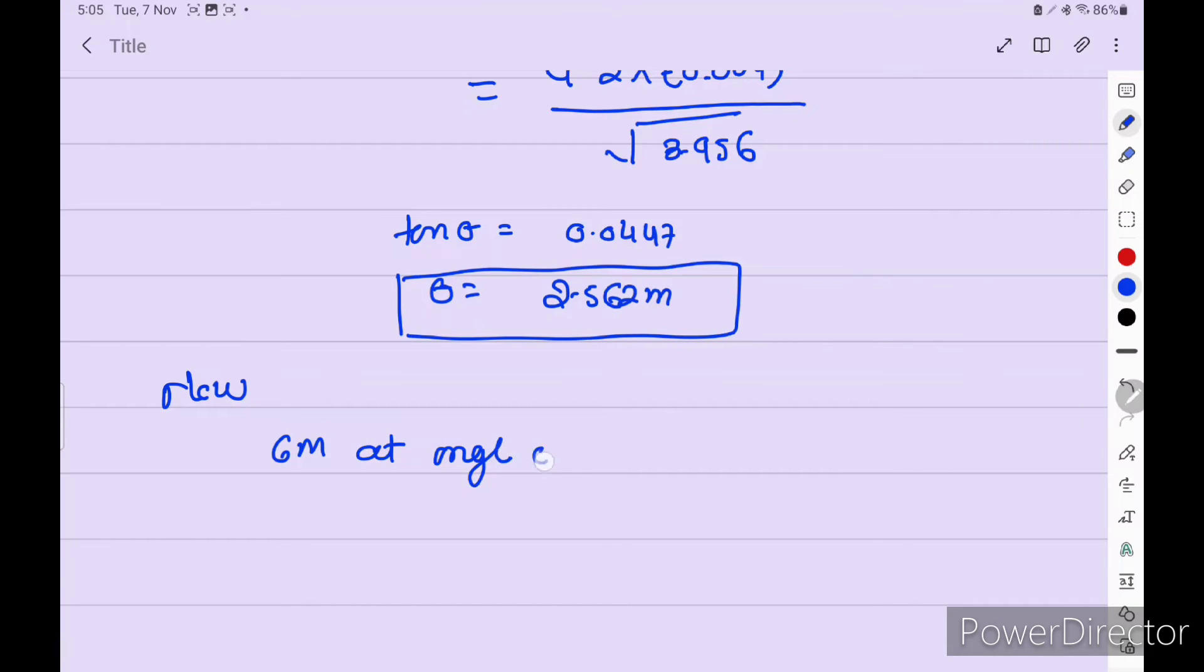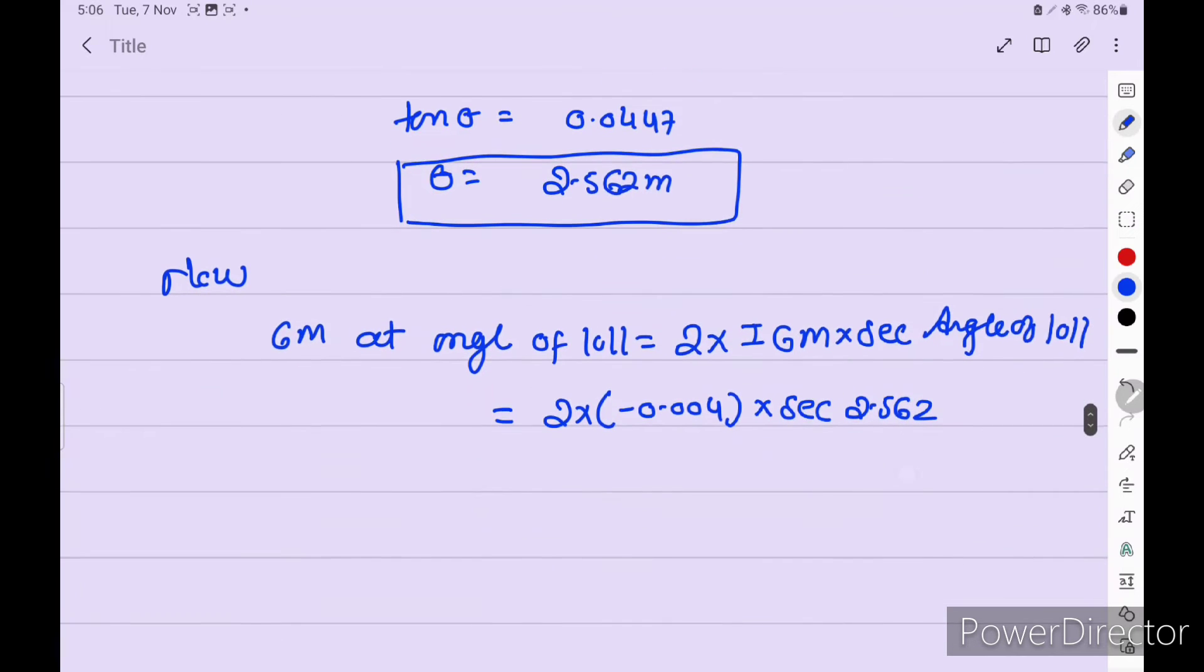Is equal to 2 into initial GM into sec angle of loll. So 2 into minus initial GM 0.004 into sec 2.562. So GM angle of loll is equal to 0.008. So it should always, always in positive.